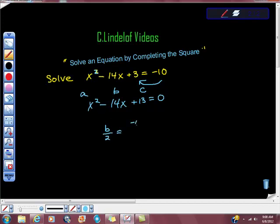So I would divide b in half. So that's negative 14 divided by 2, which is equal to negative 7. I would square that number. So from there, I would take this value, and I would square it. So this is step 1, this is step 2, I would square it, and I would get 49.